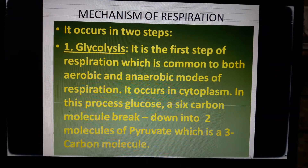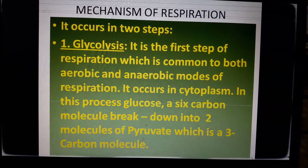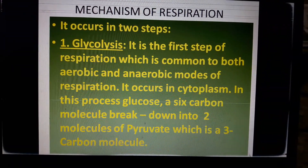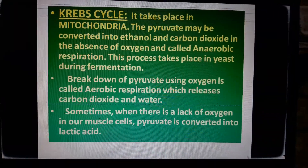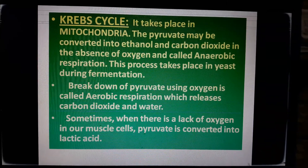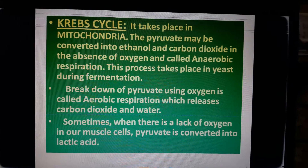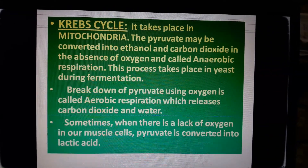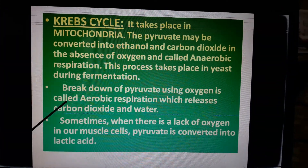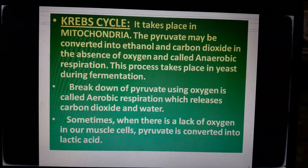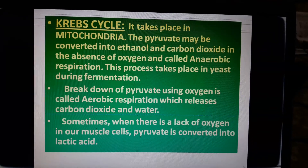Glycolysis is the first step of respiration and is common to both aerobic and anaerobic modes of respiration. It occurs in the cytoplasm. In this process, glucose, a six-carbon molecule, breaks down into two molecules of pyruvate, which is a three-carbon molecule. In the Krebs cycle, which takes place in the mitochondria, pyruvate may be converted into ethanol and carbon dioxide in the absence of oxygen — this is anaerobic respiration, which occurs in yeast during fermentation. The breakdown of pyruvate using oxygen releases carbon dioxide and water in aerobic respiration. When there is a lack of oxygen in muscle cells, pyruvate is converted into lactic acid.